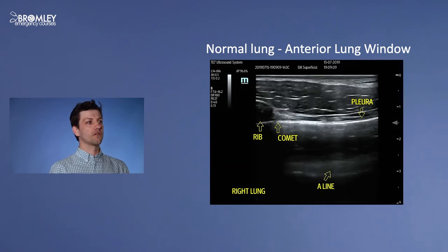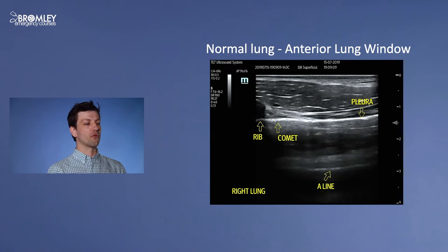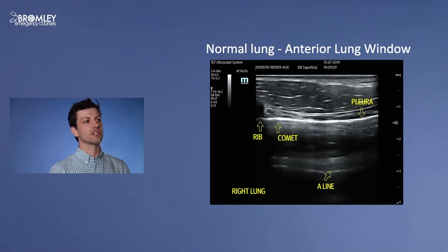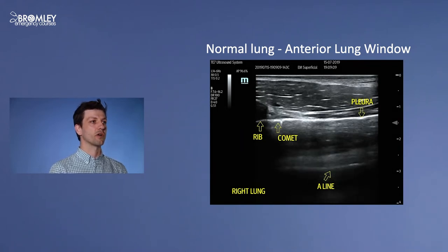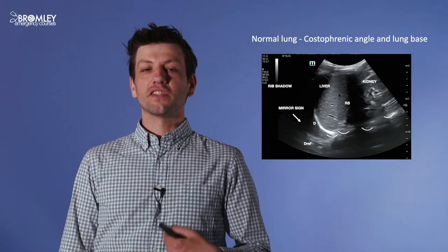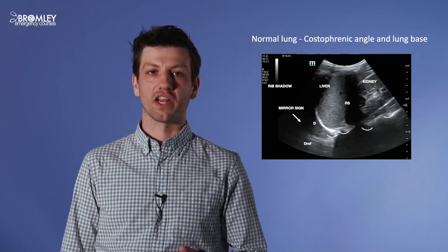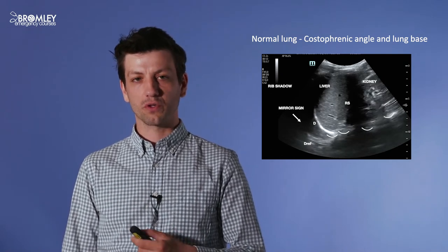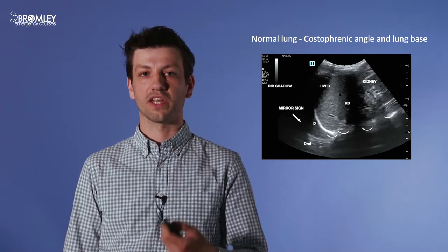Here is a video of normal lung — an anterior lung window taken with a linear high frequency probe. We see a rib, a rib shadow, some comet tail artefacts emanating from the pleural line, some A lines, and lung sliding — a shimmering at the pleural line representing movement of the visceral pleura with normal breathing. And this is a normal lung window from the lateral side, looking at the costophrenic angle at the base of the lung. Here we see a kidney, liver, rib shadows, and mirroring of the liver architecture above the diaphragm — which is normal.